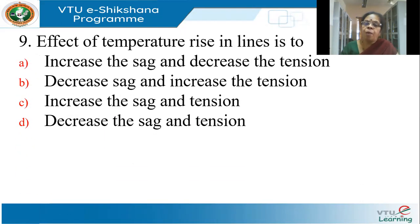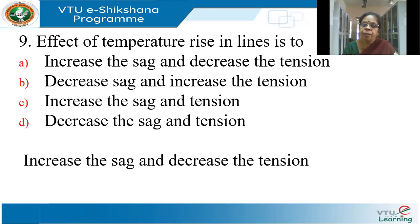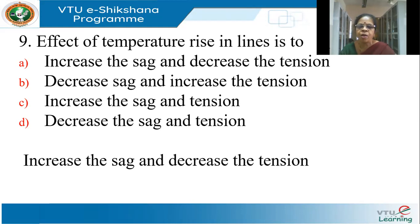What is the effect of temperature rise on lines? When temperature increases, sag will increase and tension will decrease. Sag and tension are inversely proportional: S = WL² / 8T. So both cannot increase or decrease simultaneously — options C and D are ruled out. Temperature heats up the conductor, so it will bend more and sag increases. The correct answer is: increase the sag and decrease the tension.